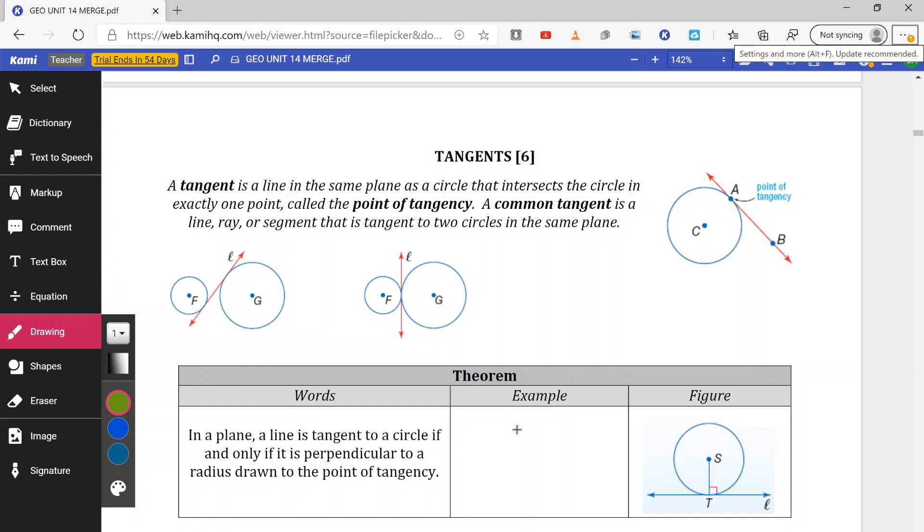Common tangent is a line or segment that is tangent to two circles at the same time.